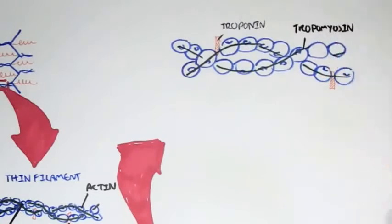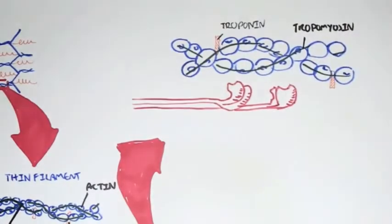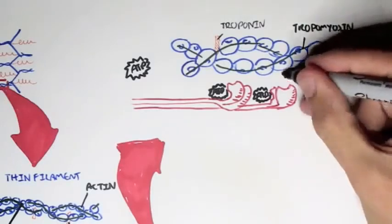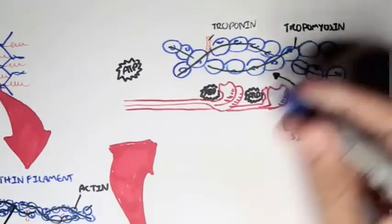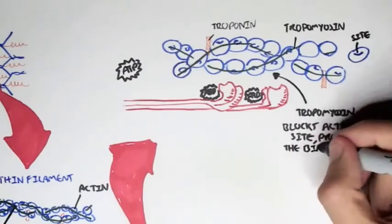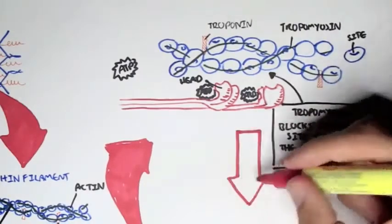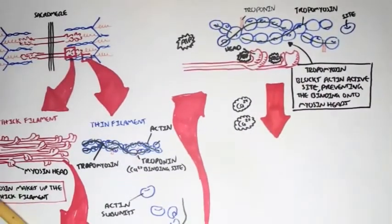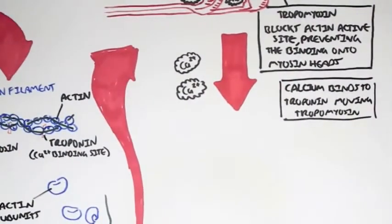Here we have two duplicates of myosin heads shown in red, and they want to bind to the actin subunits. When ATP comes along, ATP will bind onto the ATP binding site of the myosin, and this causes myosin to want to bind to actin subunits. But it can't, because tropomyosin blocks the actin's binding site, preventing the binding of myosin heads onto actin subunits. And so if we introduce calcium, calcium will bind to the troponin — the orange part.